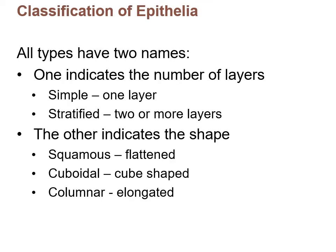For classification of epithelia, epithelium has two names. The first indicates the number of layers: one layer is called simple epithelium, two or more layers is stratified epithelium. The second name indicates the shape — there are three shapes: flattened (squamous), cube-shaped (cuboidal), or elongated (columnar).